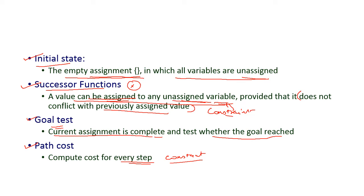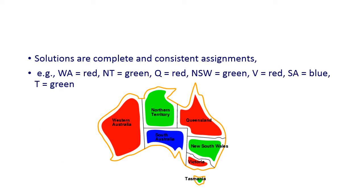In most CSP problems, the step cost is constant. The solution for our map coloring problem assigns: red to Western Australia, green to Northern Territory, red to Queensland, green to New South Wales, red to Victoria, blue to Southern Australia, and green to Tasmania. There are many other solutions as well.